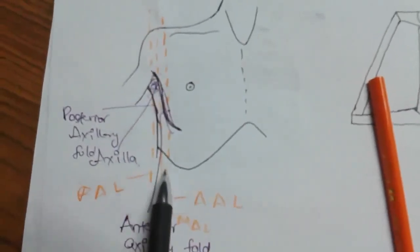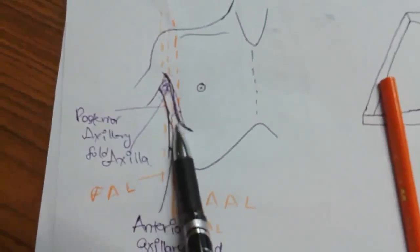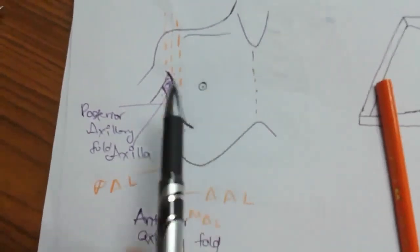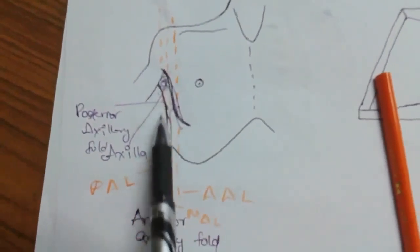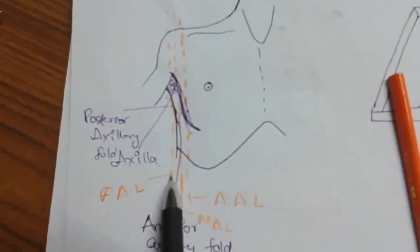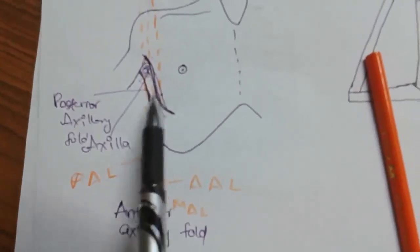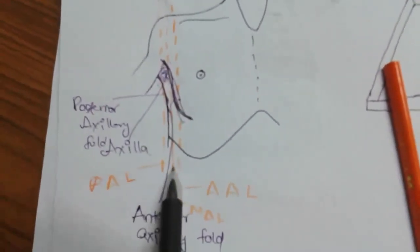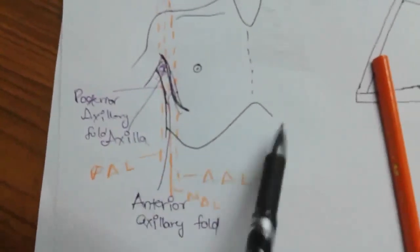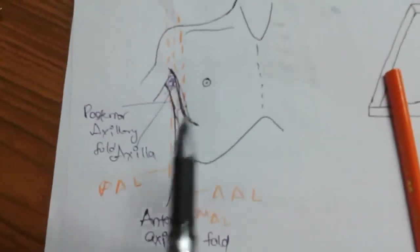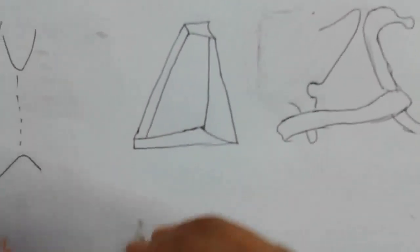So to summarize: the line through the anterior axillary fold is the anterior axillary line, the line through the posterior axillary fold is the posterior axillary line, and the line in between is the mid-axillary line. These are the three axillary lines.